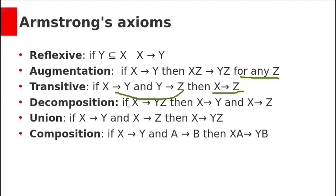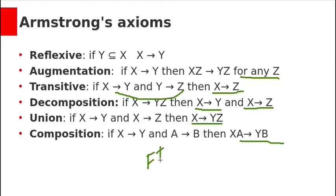Decomposition rule — if X → YZ, then X → Y and X → Z are valid. Union rule — if X → Y and X → Z, then X → YZ is also true. Composition rule — if X → Y and A → B, then XA → YB is also true. With these rules we can derive additional functional dependencies F+ from a given set of FDs F by recursively applying Armstrong's Axioms.